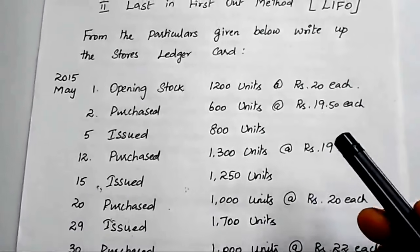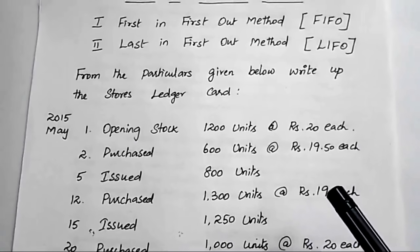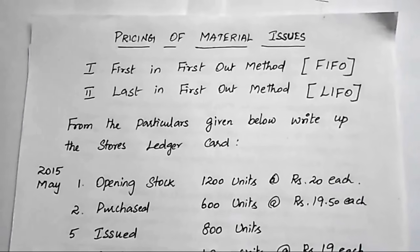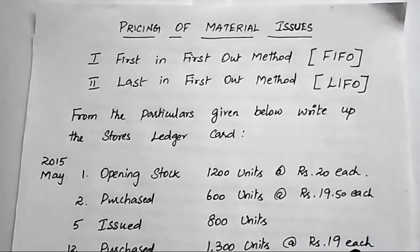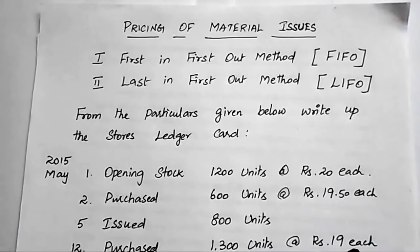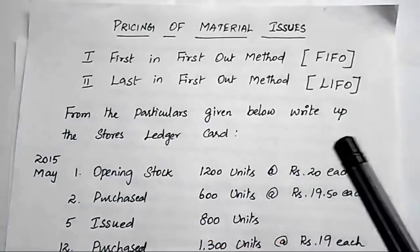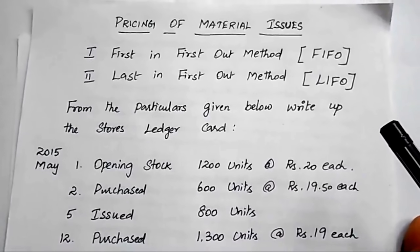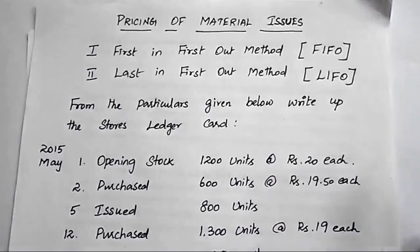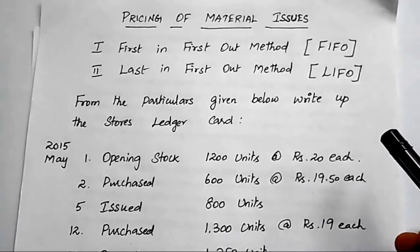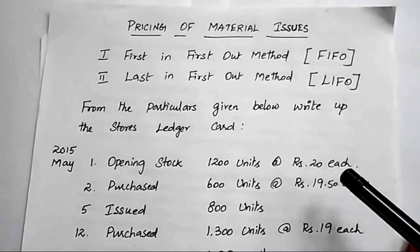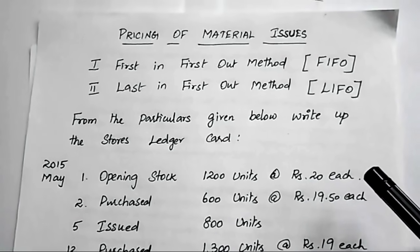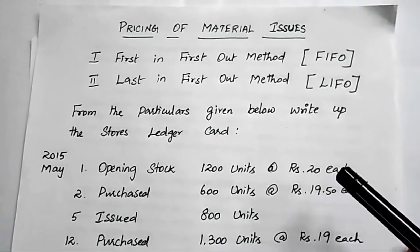The purchase price of material fluctuates on account of three reasons. First, change in the product price. Second, buying from different suppliers — each supplier quotes a different price. Third, some suppliers allow quantity discount, trade discount, or cash discount. All these are reasons for price fluctuation.